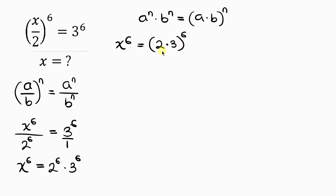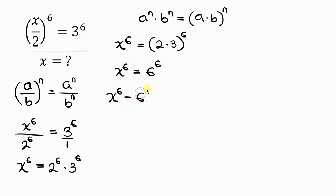We simplify inside the bracket: x to the 6 equals 6 to the 6. Our next step is to move 6 to the 6 to the left-hand side, giving us x to the 6 minus 6 to the 6 equals 0.